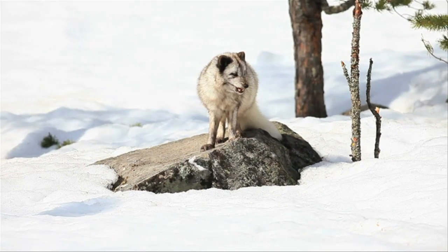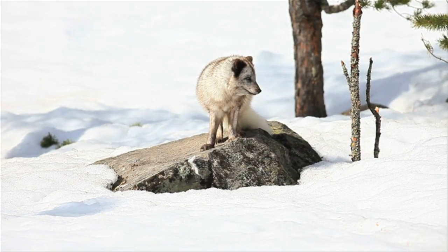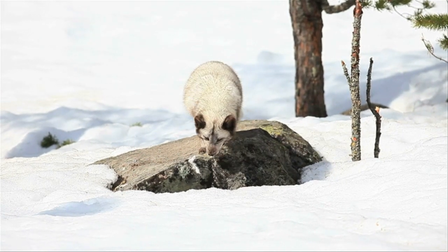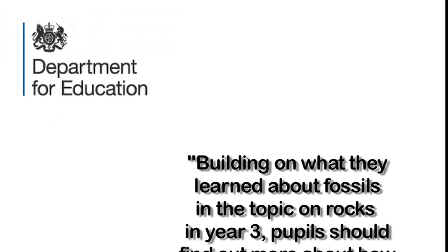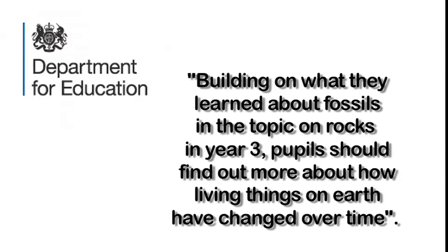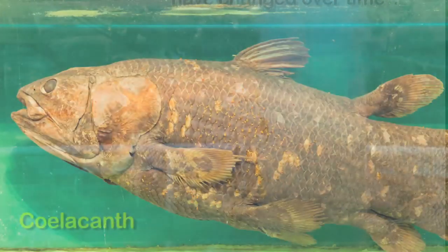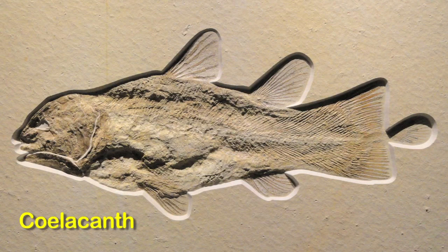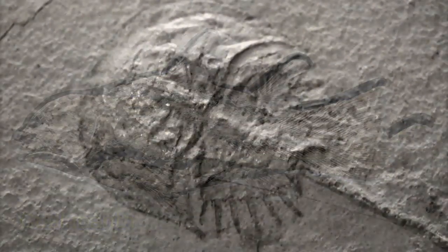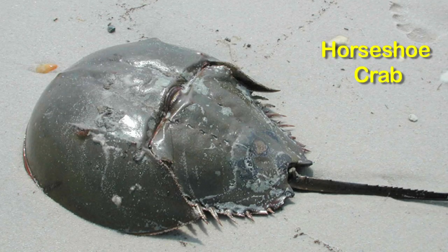The Arctic fox may well have adapted to its environment, but only by using existing genetic information. Its insulating white fur may actually be the result of adaptation by natural selection — survival of the fittest. But this is not the evolution of one type of animal to another. In the same notes and guidance, it states that, building on what they learned about fossils in the topic on rocks in year 3, pupils should find out more about how living things on Earth have changed over time. Teachers should also make it plain to students that living fossils such as the coelacanth do not show any evidence of change over time. On the contrary, fossils like these show considerable evidence that many species have remained unchanged and do not show any evidence of one species changing into another.